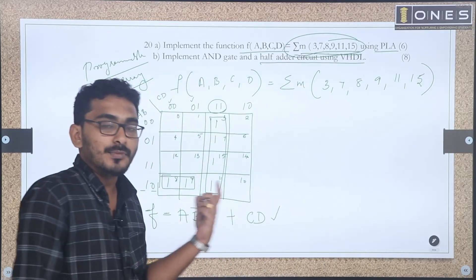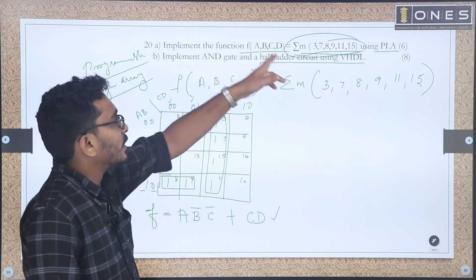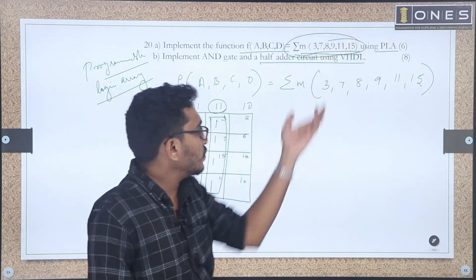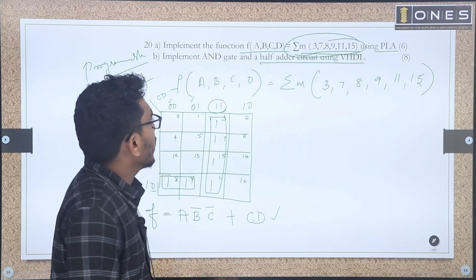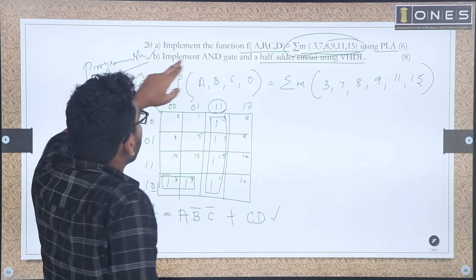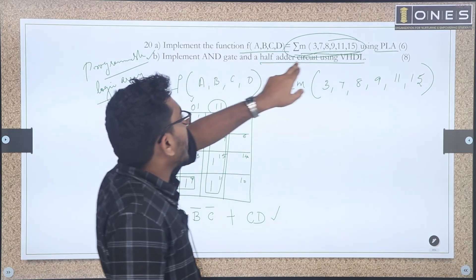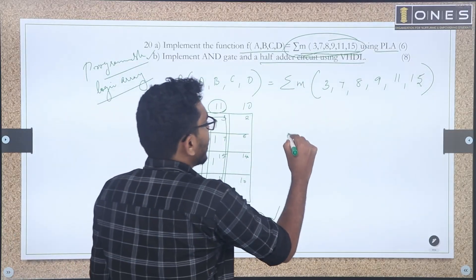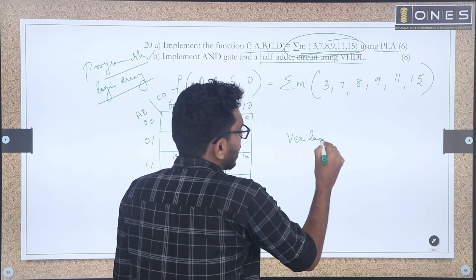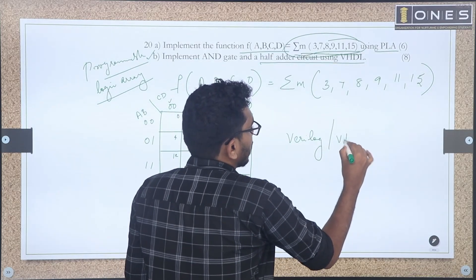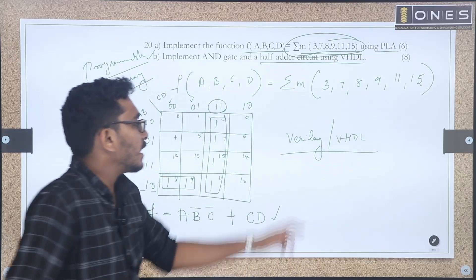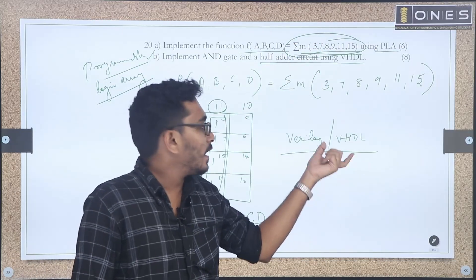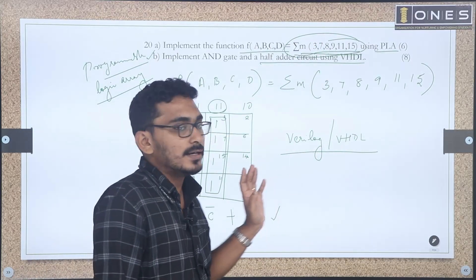This function uses AND gates and OR gates in the PLA. The next question is to implement an AND gate and a half adder circuit using VHDL. Note: in the syllabus, Verilog programming is mentioned, but in the exam it is VHDL. If you know Verilog and VHDL, you will get the same marks. What I will explain now is VHDL.